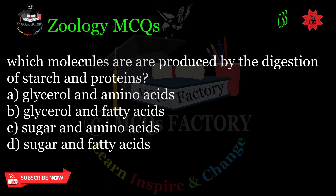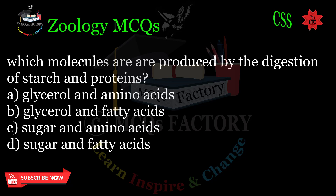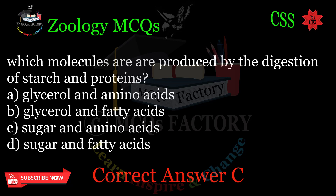Which molecules are produced by the digestion of starch and proteins? A. Glycerol and amino acids. B. Glycerol and fatty acids. C. Sugar and amino acids. D. Sugar and fatty acids. Correct answer: C.